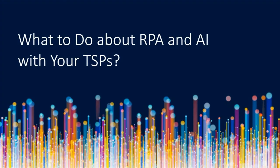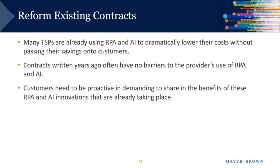Moving on to what to do about RPA and AI with your technology service providers: while the state of our laws and regulations will lag behind these rapid developments, as your clients begin to build, buy, or license RPA and AI, you'll need to default to contract principles as the framework for development, use, and risk allocation — particularly with AI. You'll need to think about how to reform your existing technology service provider agreements. Your existing contracts probably don't have prohibitions on or any terms at all regarding AI or RPA. As a result, many outsourced service providers are already implementing RPA and AI and pocketing the savings quietly instead of sharing them with your clients as the customer.